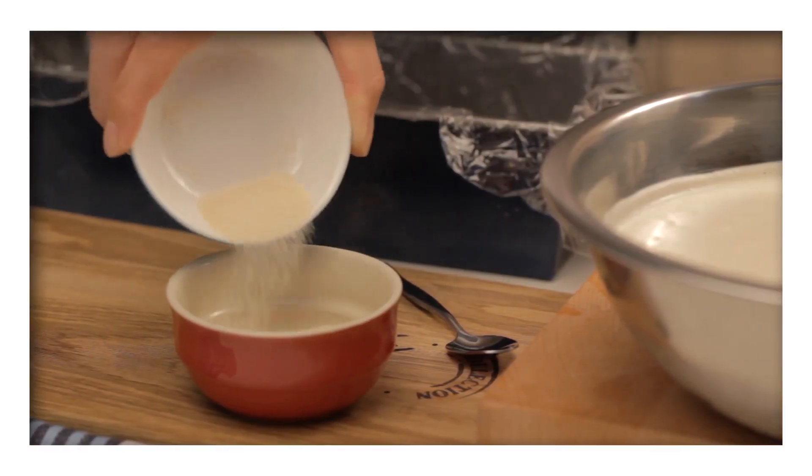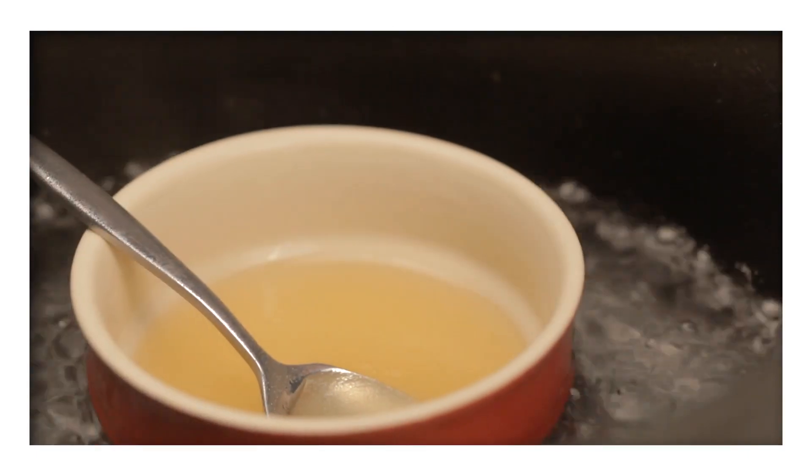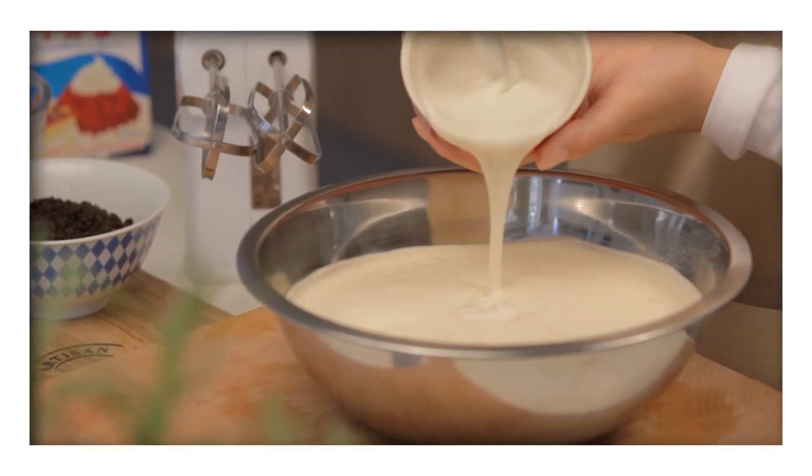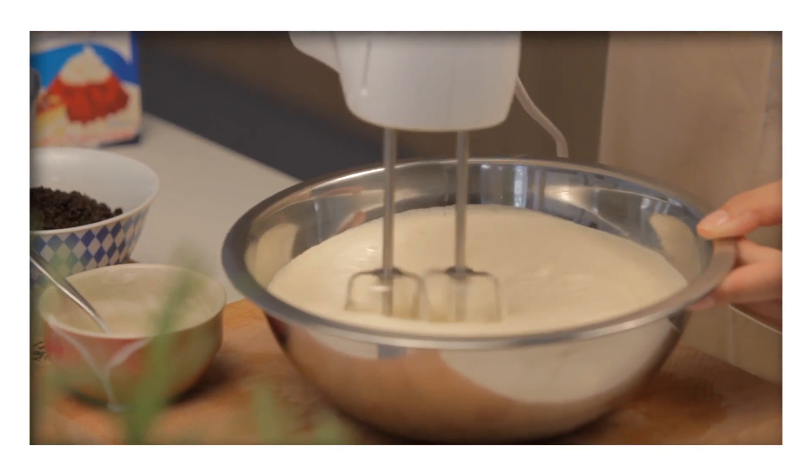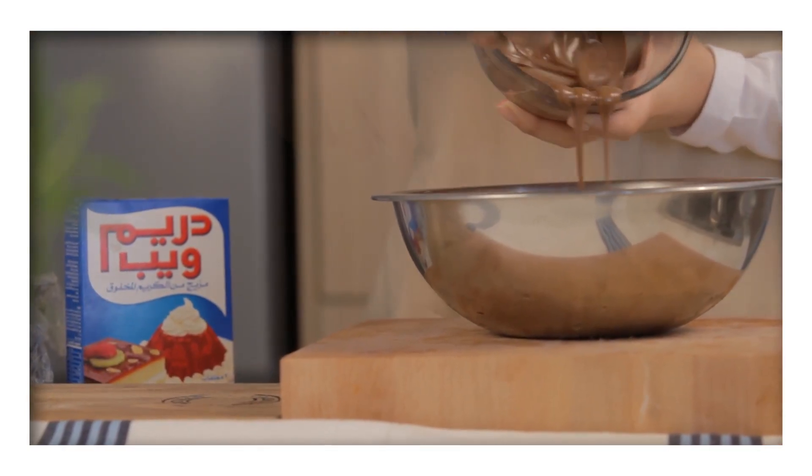Then, in a small bowl soften the gelatine in cold water and place it over hot water to dissolve. When it has dissolved, beat it into the ice cream mixture before folding in half a cup of crushed Oreos and the melted Cadbury Dairy Milk chocolate.